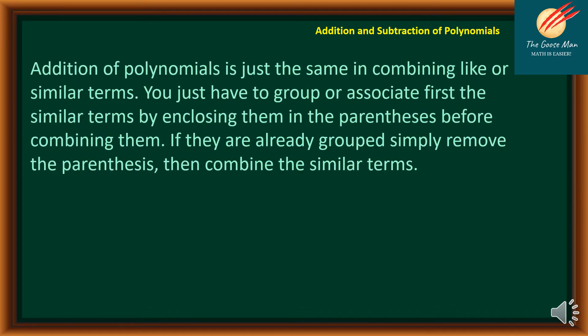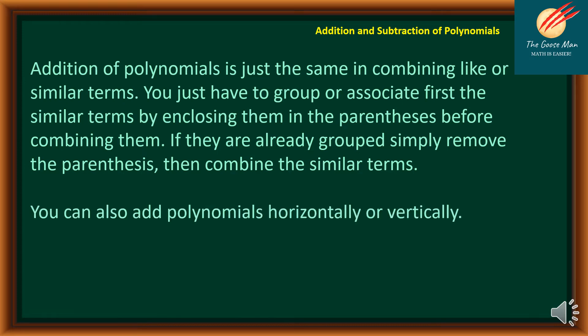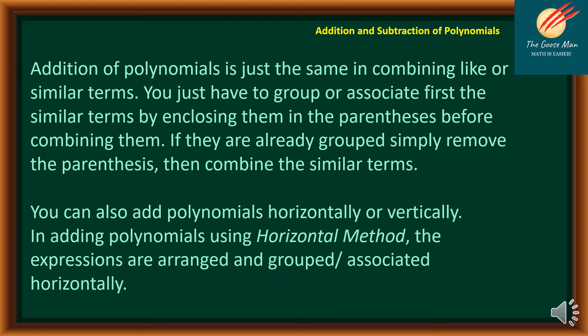Addition of polynomials is just the same as combining like or similar terms. You just have to group or associate the similar terms first by enclosing them in parentheses before combining them. If they are already grouped, simply remove the parentheses, then combine the similar terms. You can also add polynomials horizontally or vertically. In adding polynomials using the horizontal method, the expressions are arranged or grouped horizontally.